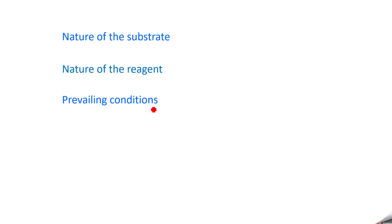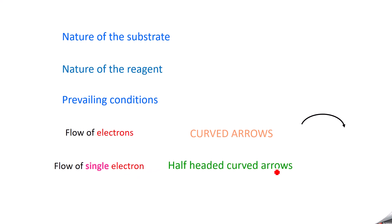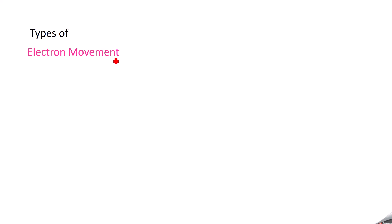If there is a flow of a pair of electrons to be shifted, that is indicated by curved arrows like this. If there is a flow of a single electron — only one electron is to be shifted — then it is indicated by half-headed curved arrows like this.